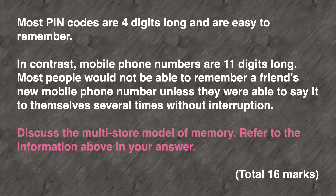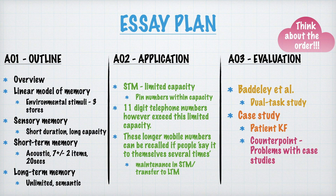Moving on. This is essay number two — it's an application essay that came up in a Paper 1 a couple of years ago. As you can see, the outline and evaluation sections are largely the same as the last essay, except I've cut out one evaluation point. We've also got the application section in green, and I've popped some notes down on how the scenario links to the stem.